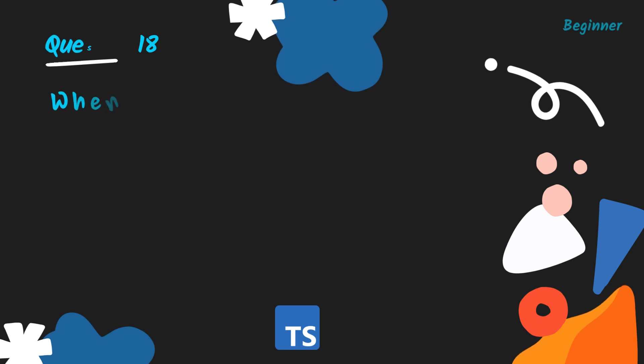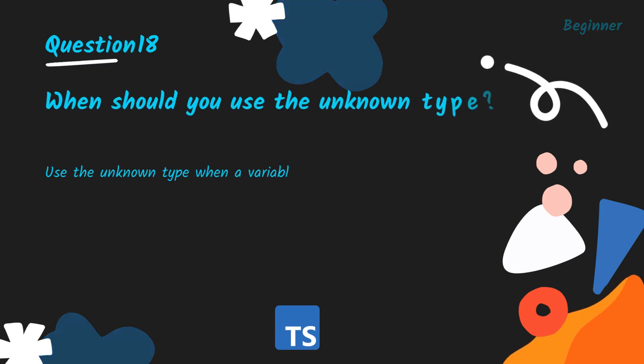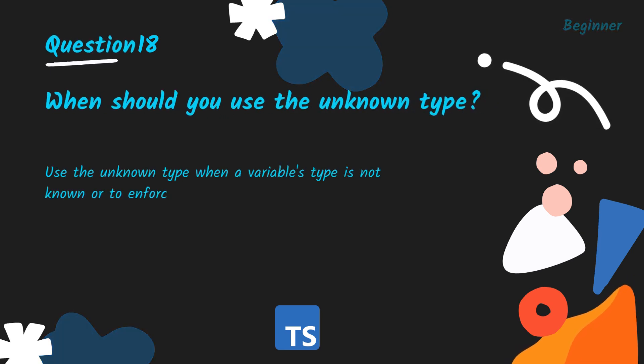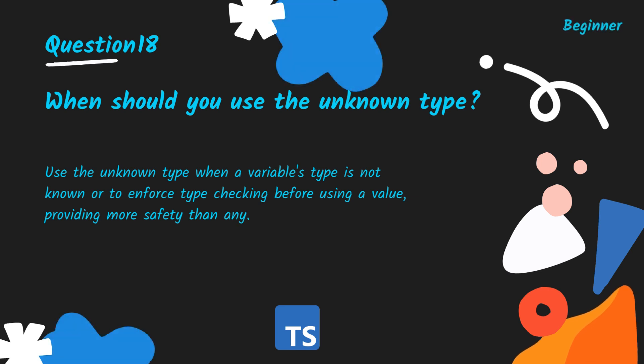When should you use the unknown type? Use the unknown type when a variable's type is not known, or to enforce type checking before using a value, providing more safety than any.